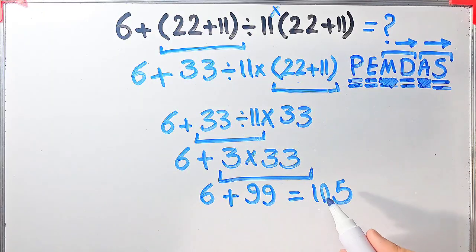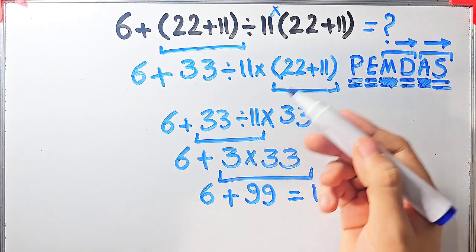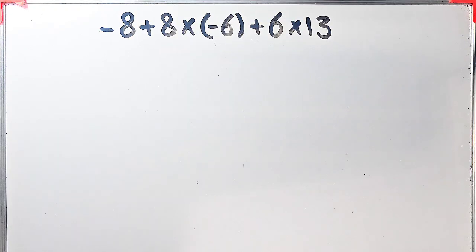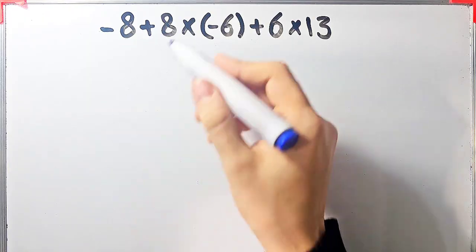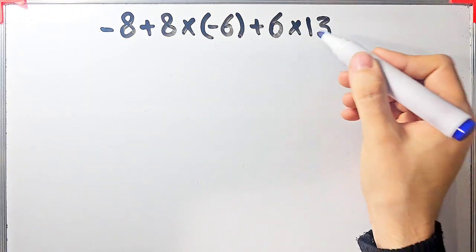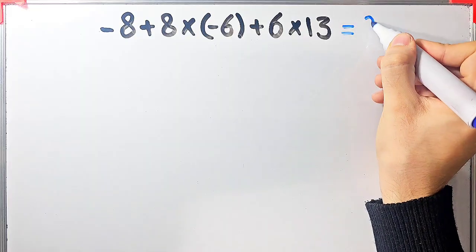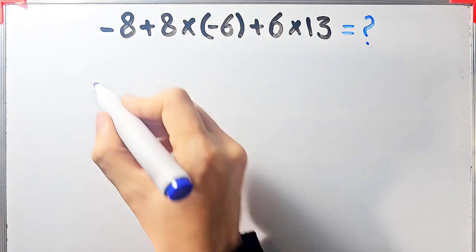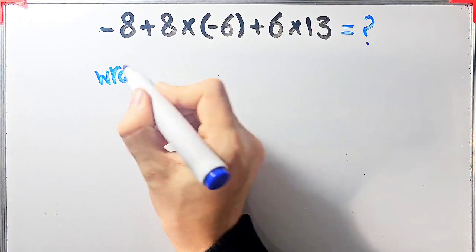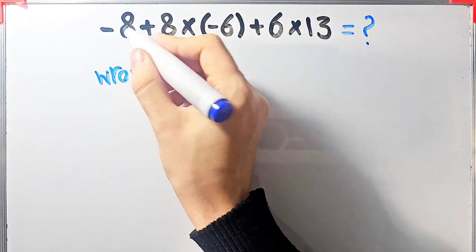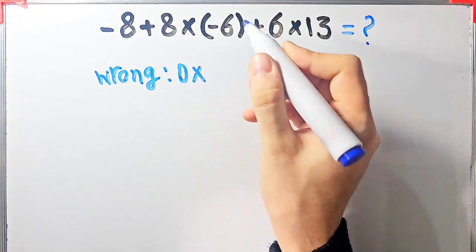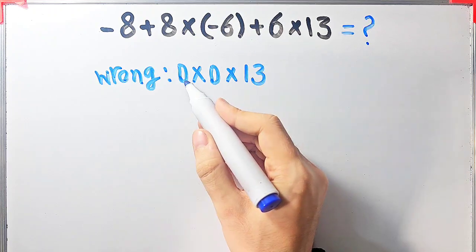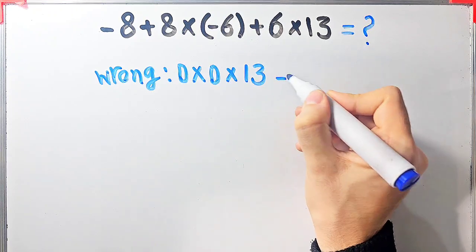Okay guys, let's solve another question about the PEMDAS rule. In this question we have negative 8 plus 8 then times negative 6 plus 6 then times 13. What is the value of this expression? Some people solve this question incorrectly: they say negative 8 plus 8 equals 0, then 0 times negative 6 plus 6 equals 0, then 0 times 13 equals 0 — but this answer is definitely wrong.